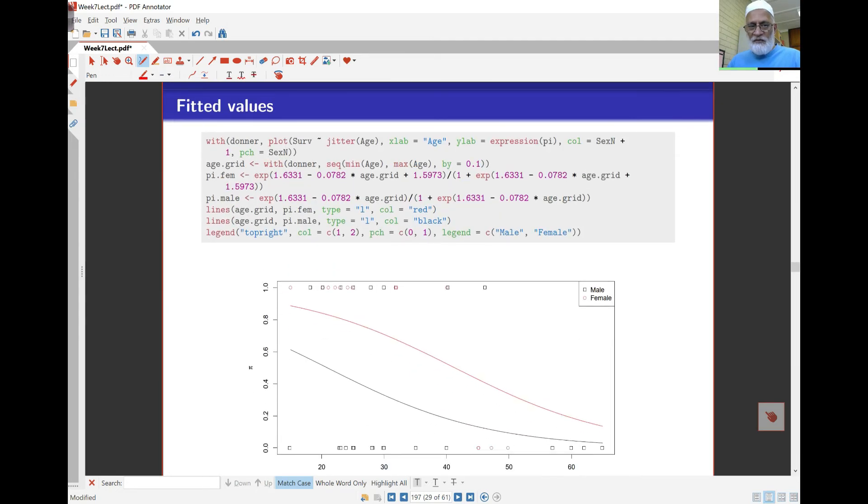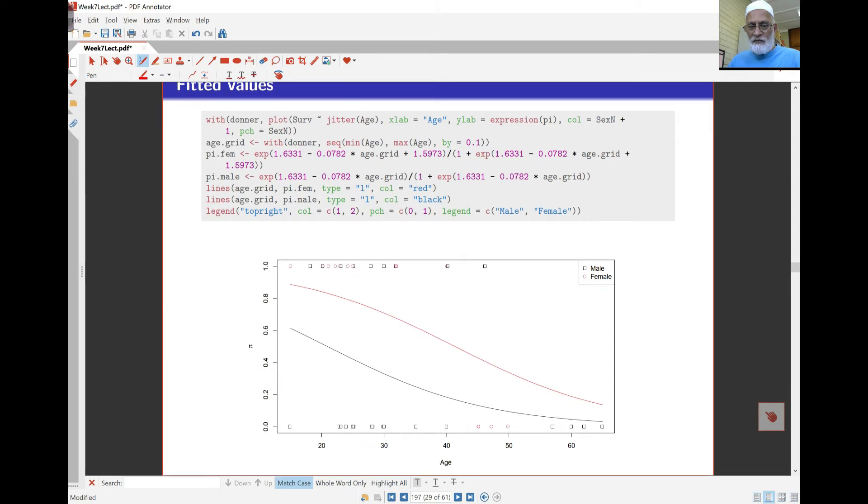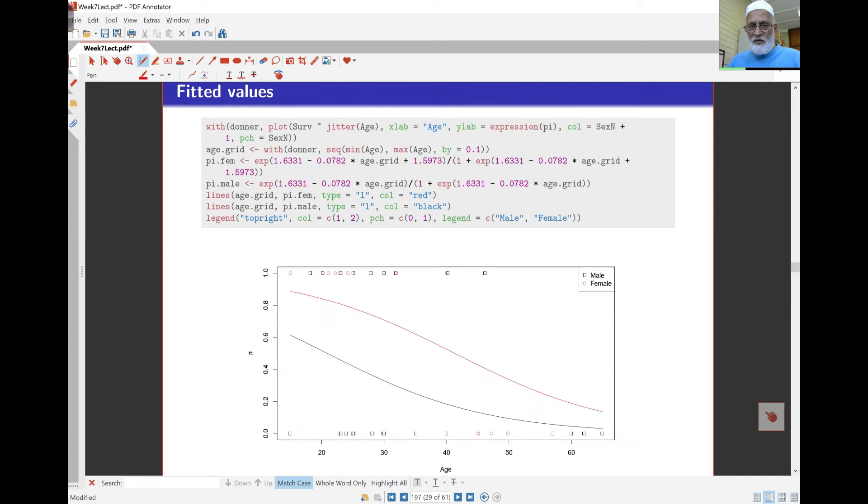Here's a plot of the survivals for males and females with age. You can see that the females have a higher probability of survival at every age, even at the higher ages. Although it seems to come together, so maybe towards the high end there's not much difference left between males and females. But overall, it looks like the females have a higher order of survival.